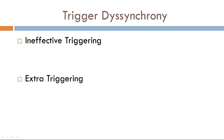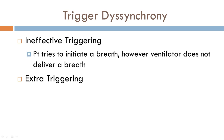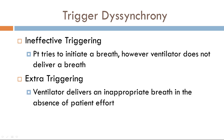In ineffective triggering, the patient tries to initiate a breath; however, the ventilator will not deliver a breath despite the patient's effort. Extra triggering is the opposite — the ventilator inappropriately delivers a breath in the absence of patient effort.